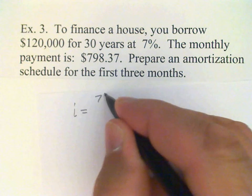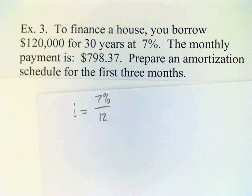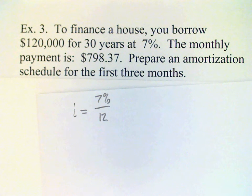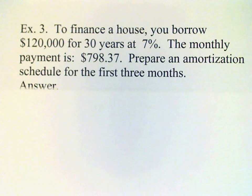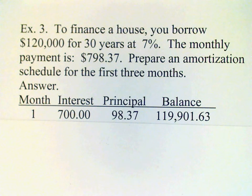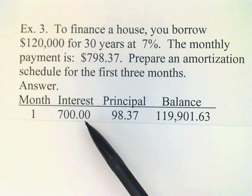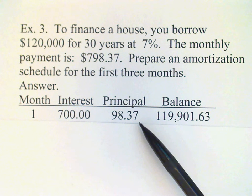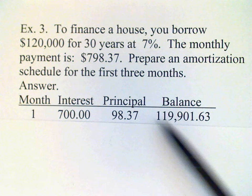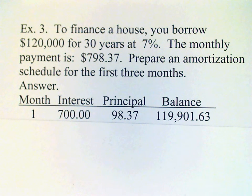In this case, the monthly interest rate is 7% divided by 12. When we multiply this by the original loan amount of $120,000, it comes out to a nice round figure: $700. That's the interest owed after one month. We make a payment of $798.37 — most of that goes to pay the $700 interest — leaving $98.37 to reduce the loan balance. Subtracting from $120,000, our new loan balance is $119,901.63.